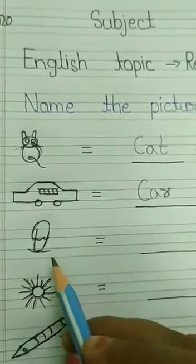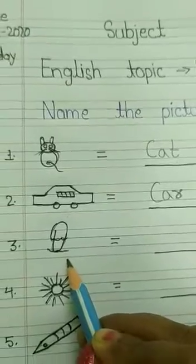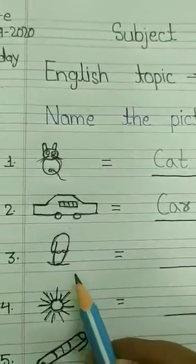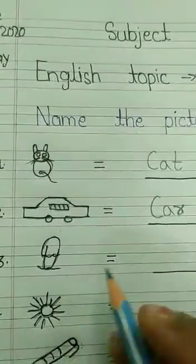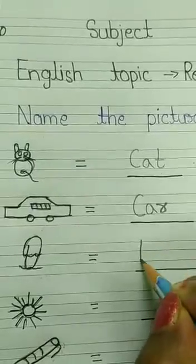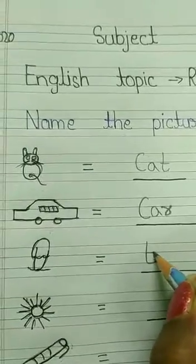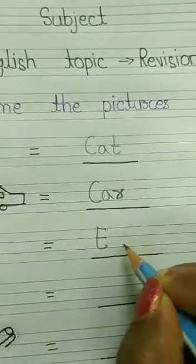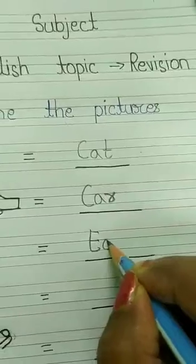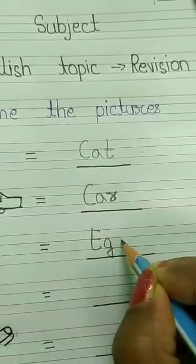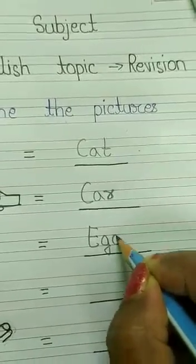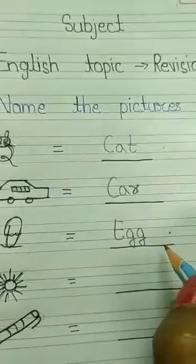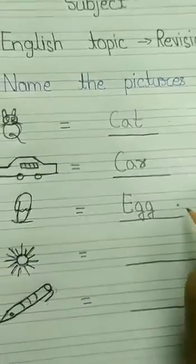Next picture क्या है? Egg का है ना. Egg means अंडा. Egg की spelling क्या होगी? E-G-G, double G. E-double G, egg. Egg means अंडा.